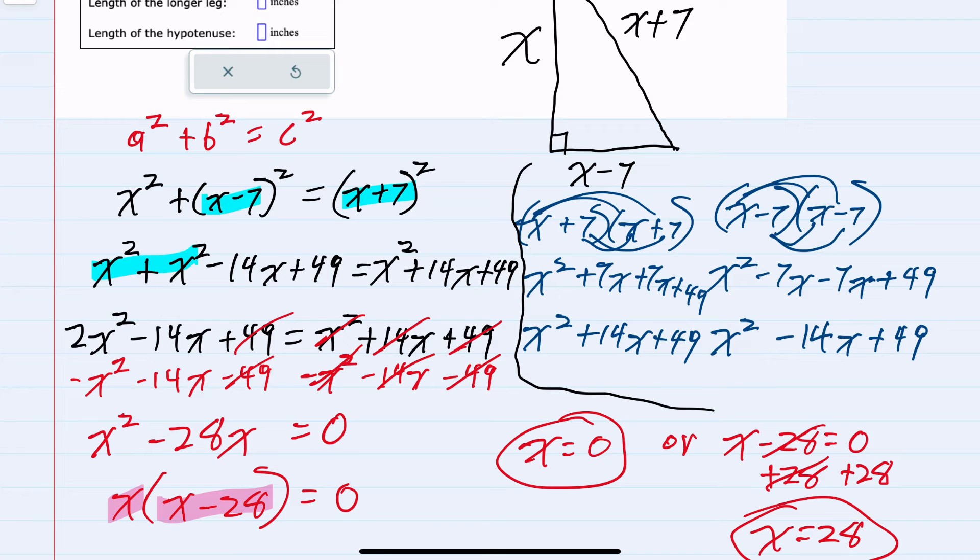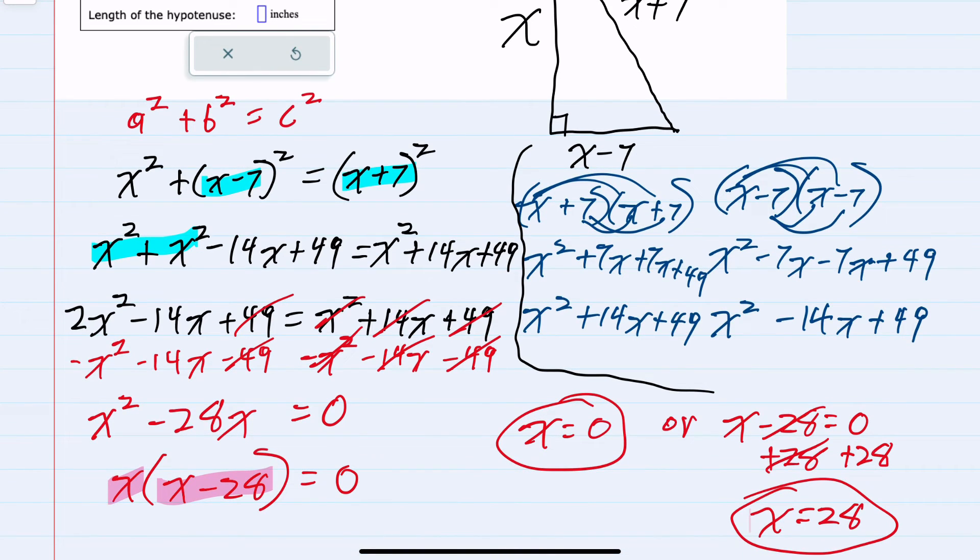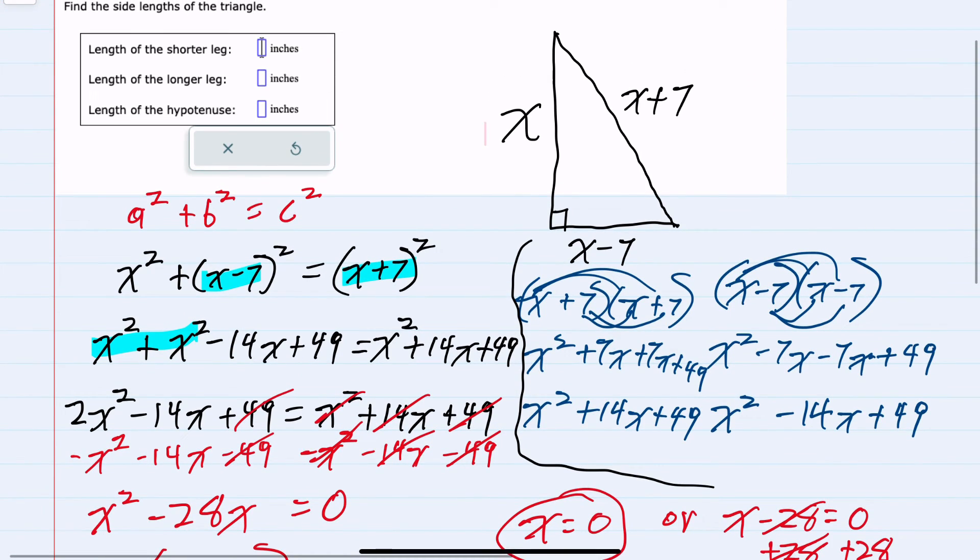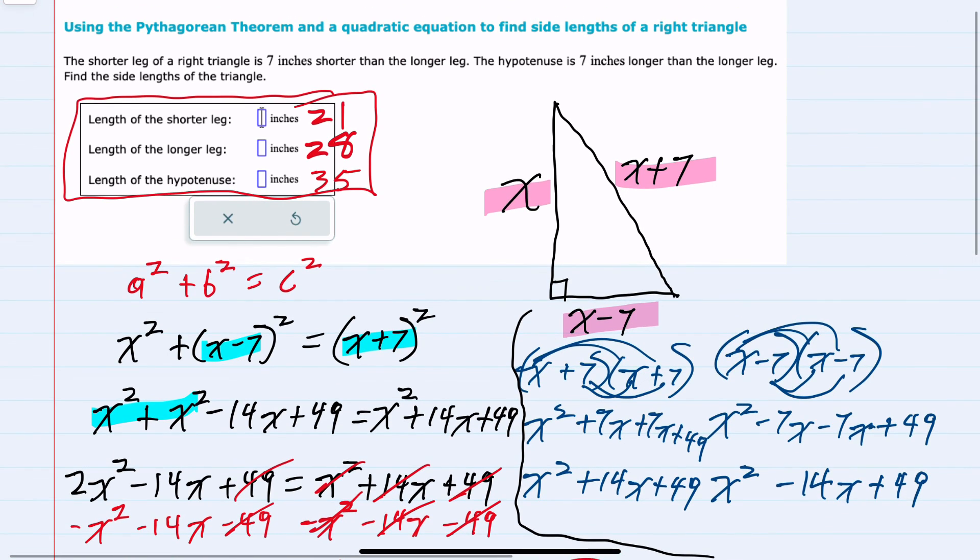The other solution x equals 28 does give me a good solution because the longer side here if it were 28 the short side would be 28 minus 7 or 21 and the hypotenuse would be 28 plus 7 or 35. This would be the dimensions for the triangle described in this problem.